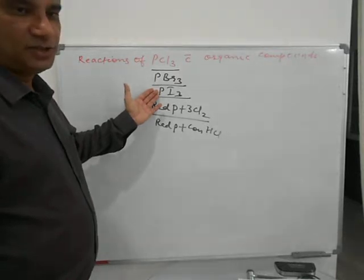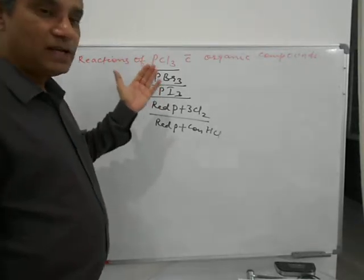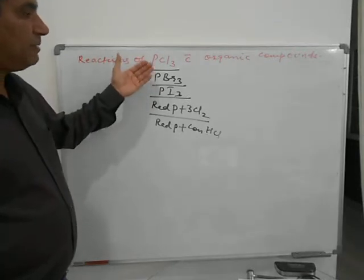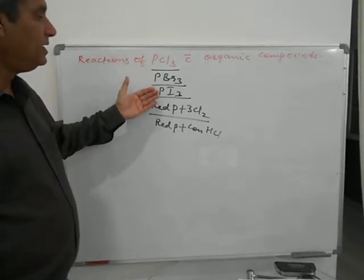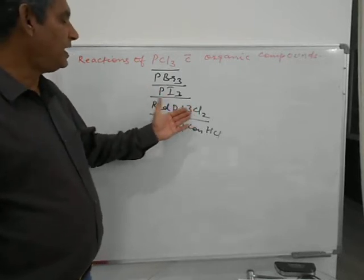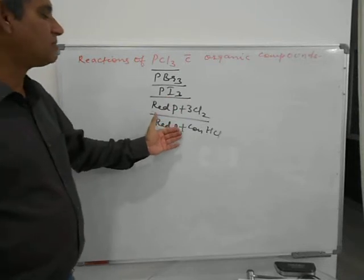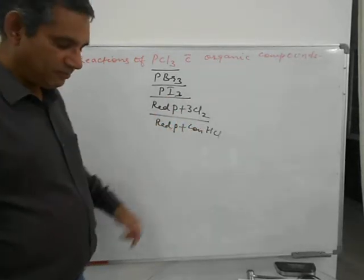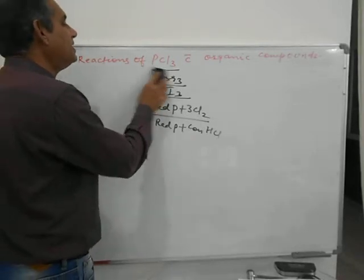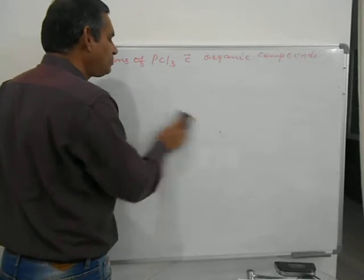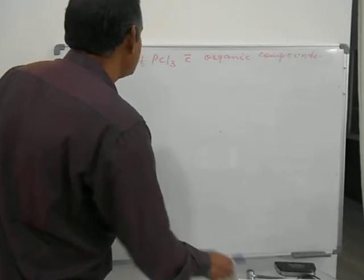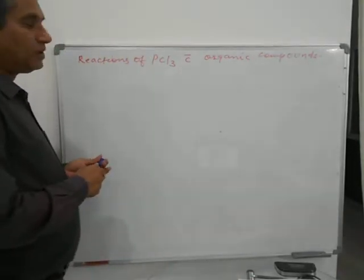In this way only we can prepare PBr3 or PI3. So there are a large number of equivalent reagents: PCl3, PBr3, PI3, red phosphorus plus 3Cl2 or 3Br2 or 3I2, or red phosphorus plus HCl, HBr, or HI. Any of these compounds you can take and consider. Now we will see how organic compounds react with red phosphorus plus Cl2, or equivalently PCl3.